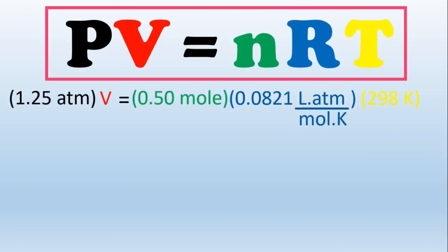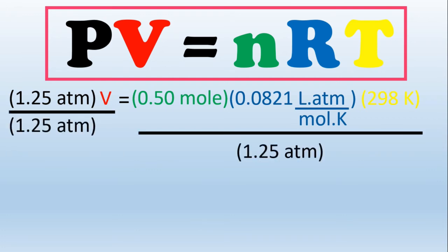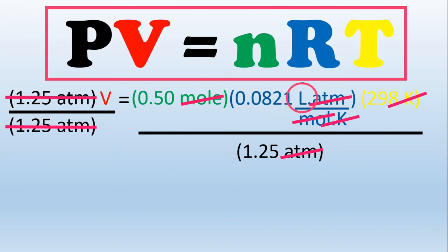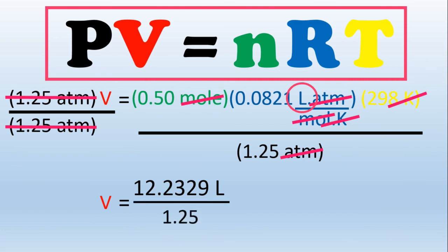After substituting the known values, we solve mathematically. To isolate V, divide both sides by 1.25 ATM. On the left side, 1.25 ATM divided by 1.25 ATM equals 1, and after cancellation of units, only the liter unit remains. This gives V equal to 12.23 liters divided by 1.25, so V equals 9.8 liters.